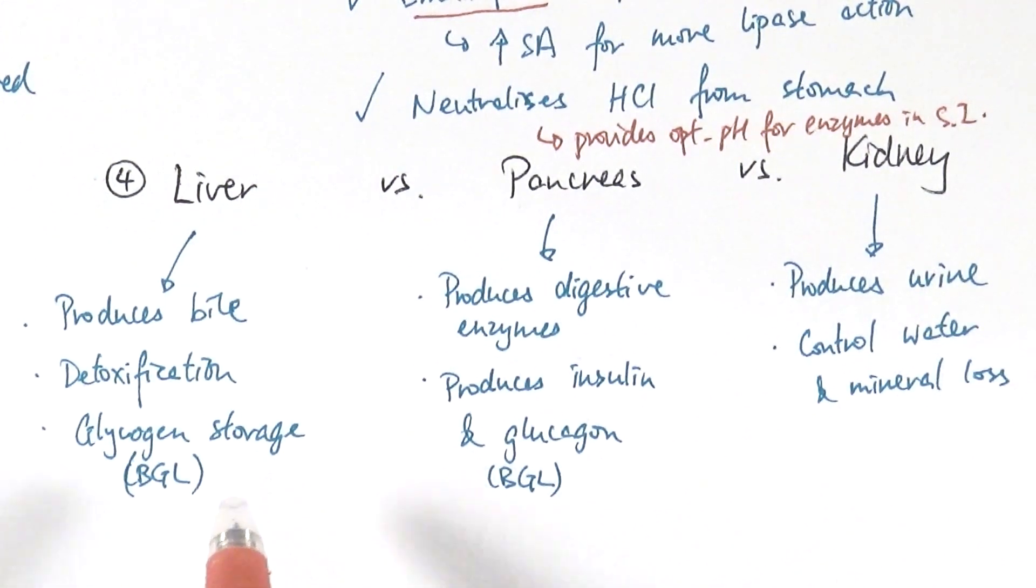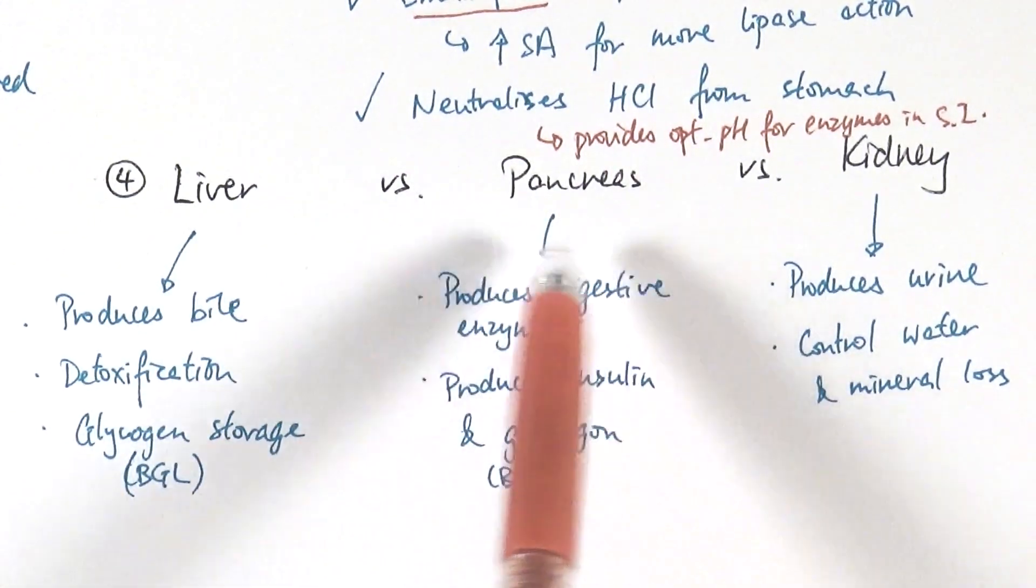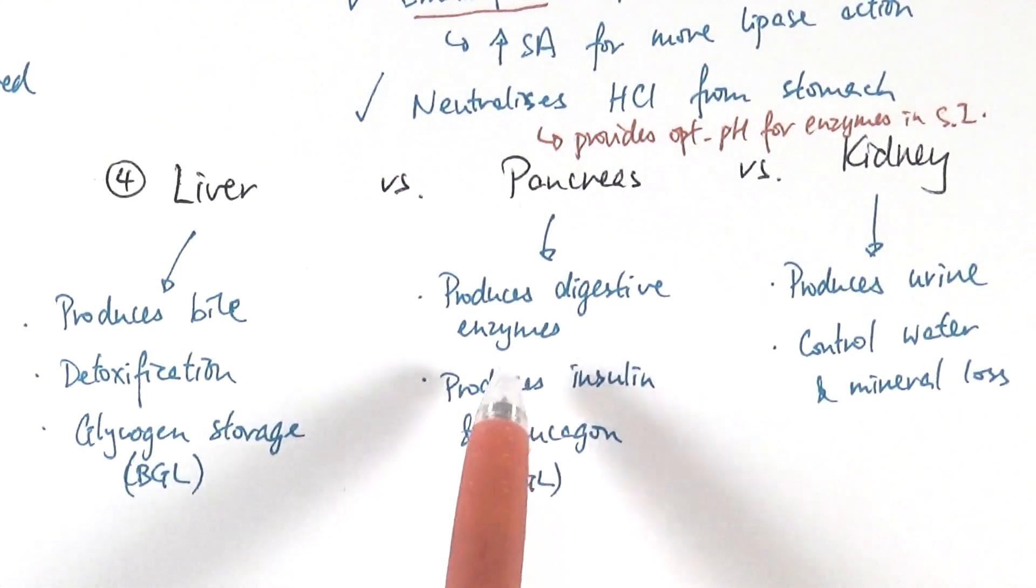lipase that breaks down lipids to a glycerol and three fatty acids, and also proteases that work not in the stomach, but in the small intestine to break proteins into amino acids. So that's what the pancreas do. It's a factory of digestive enzymes.